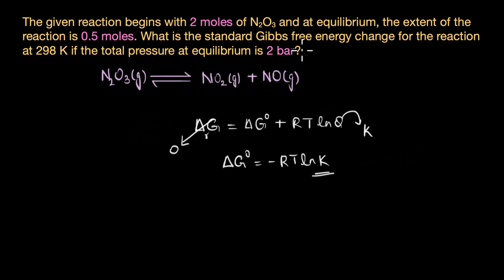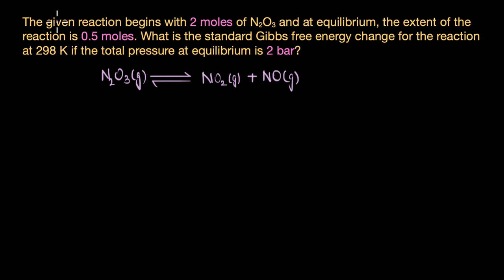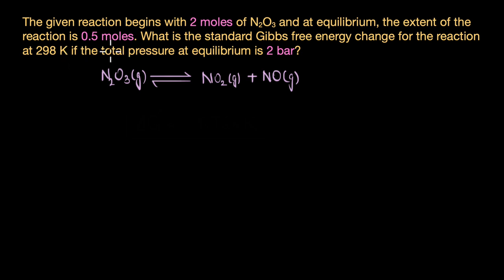In this video, we are going to solve a very interesting question. The given reaction is N₂O₃ decomposes to form NO₂ and NO gases, and begins with 2 moles of N₂O₃. At equilibrium, the extent of the reaction is 0.5 moles. What is the standard Gibbs free energy change for the reaction at 298 K if the total pressure at equilibrium is 2 bar?